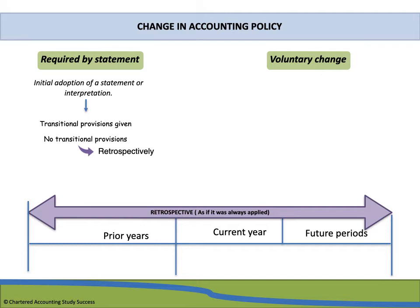Another situation that could lead to a company changing its accounting policy is a voluntary change — for example, when a company is given a choice between two options and decides to change its policy. The standard does allow for a change in accounting policy, but only when this change will result in a more reliable and relevant presentation of the financial statements. When the change is voluntary, it must also be accounted for retrospectively — as if the policy has always been applied.